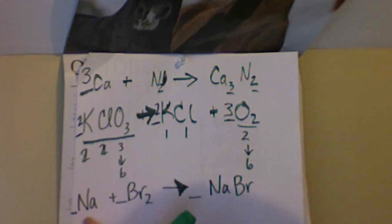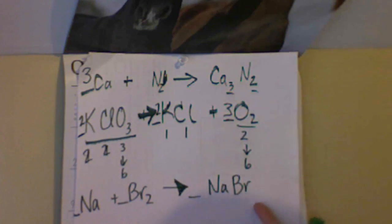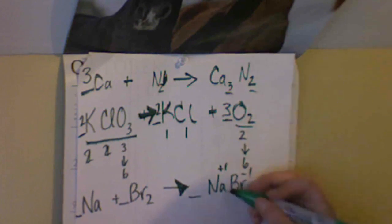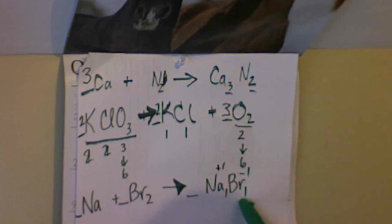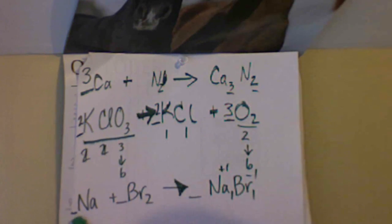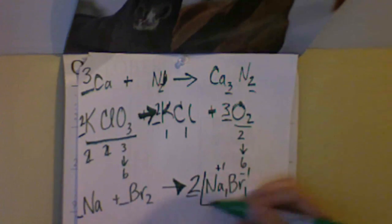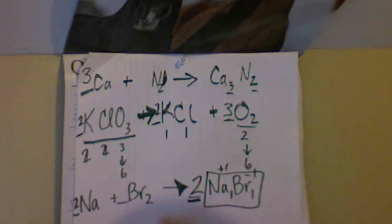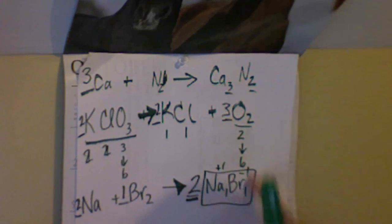Now we're looking at a synthesis reaction: sodium combines with bromine to make sodium bromide. Sodium has a plus one charge and bromine has a minus one charge, so they combine in a 1-to-1 ratio. Starting with the product sodium bromide - there's one sodium and one bromine. On the reactant side there's one sodium, which is fine, but there are two bromines in Br2. So we add a coefficient of two in front of sodium, giving two sodiums on each side, and two bromines matching the diatomic bromine molecule.